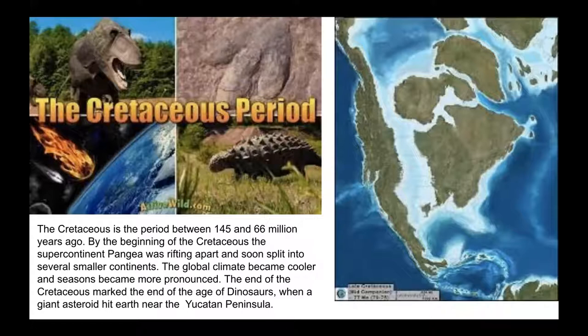By the beginning of the Cretaceous, the supercontinent Pangea — meaning all the continents were one giant continent — began rifting apart and split into several smaller continents. The global climate became cooler and seasons became more pronounced. The end of the Cretaceous marked the end of the age of dinosaurs when a giant asteroid hit Earth near the Yucatán Peninsula. Looking at what would become North America, Texas was right in the middle of a shallow sea that covered the entire middle section of the continent.